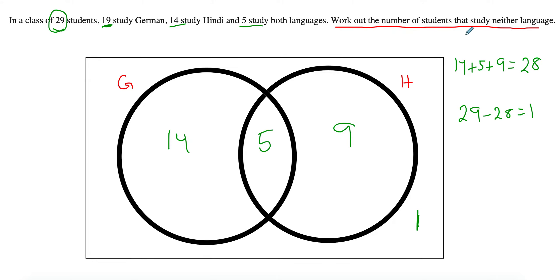Since my total is 29 and the numbers inside sum to 28, 29 minus 28 gives 1. So to answer the question: one student studies neither language.